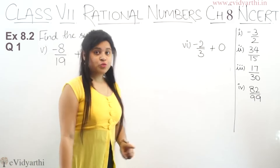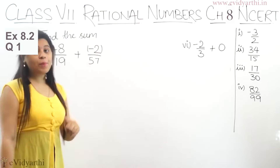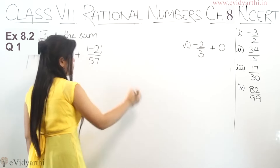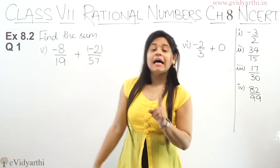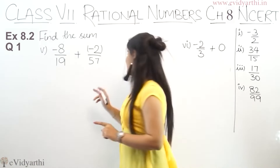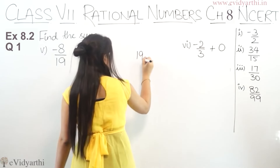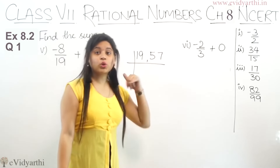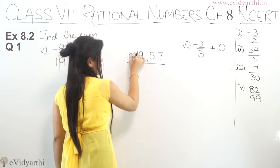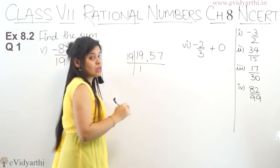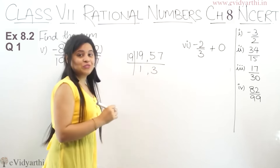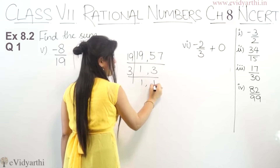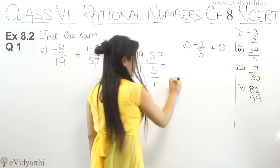Now coming to the fifth part. The fifth part has minus 8 upon 19 plus minus 2 upon 57. Again the denominators are different. We take the LCM of 19 and 57 — both are in the 19 times table: 19 ones are 19 and 19 threes are 57. Then dividing by 3 gives 1 and 1. So LCM is 19 into 3, which is 57.